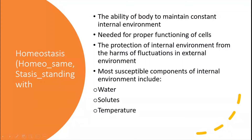Homeostasis provides protection of the internal environment from the harms of fluctuation in the external environment. For example, the body's normal temperature is 37°C. If the external environment's temperature exceeds or reduces relative to 37 degrees, the body's homeostasis maintains its normal temperature of 37 degrees. The most susceptible components of the internal environment include water, the situation in the bloodstream, and solutes.